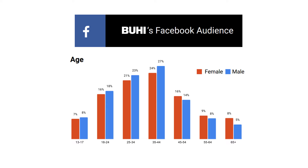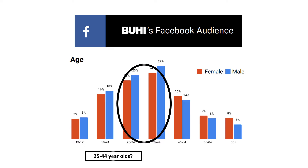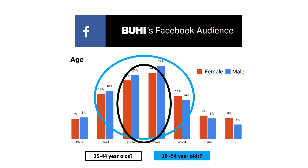For rounds one through three you're basically learning who is hanging out on each platform. In rounds four through six you'll actually choose an age range for the audience you develop. There are some decisions to make — is the audience range 25 to 44 year olds, or is it wider at 18 to 54 year olds? Generally speaking, inclusive is better.